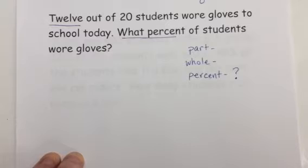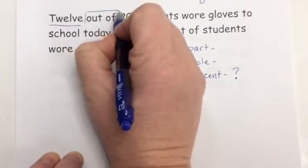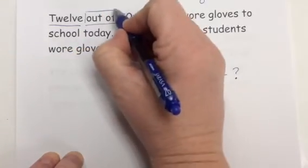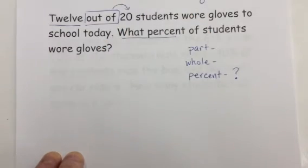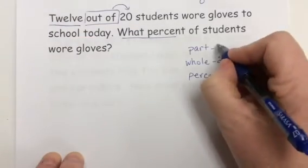So 12 out of 20. Now, I see two numbers there, but I'm not sure how to tell which one is the part or the whole. Okay, the bigger one is not always the whole, but typically, if I see the word out of, that phrase tells me whatever comes after that means the whole. 12 out of the whole 20 students. So the whole is 20, and the part is 12.